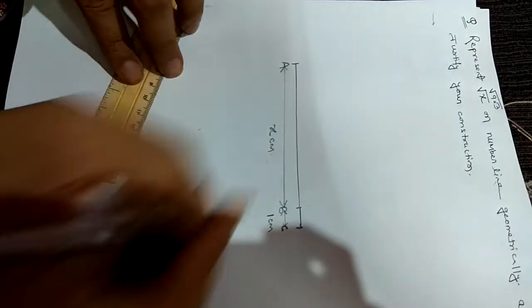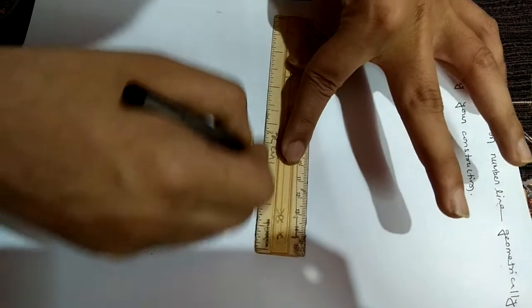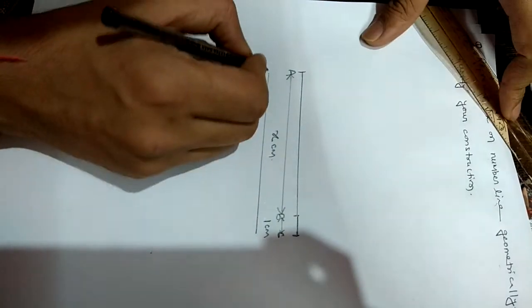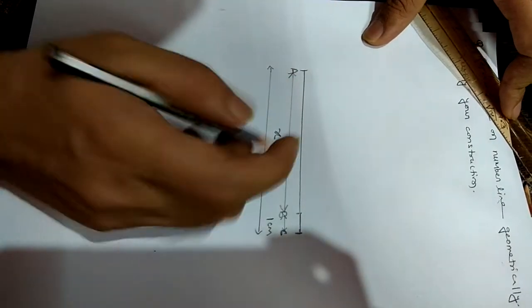This is x centimeter suppose. This is total length. If you see here, AC length, which is x and this is 1, total is how much? X plus 1.